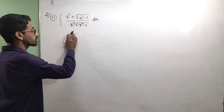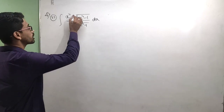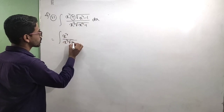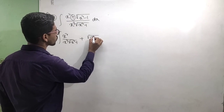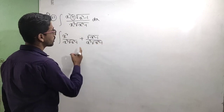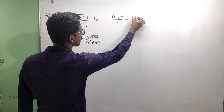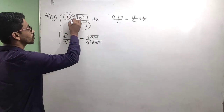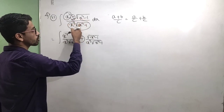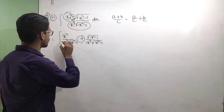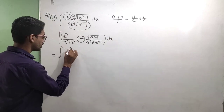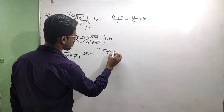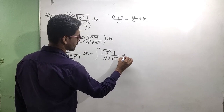The next question: integration of x square plus root over of x square minus one, divided by x cube into root over of x square minus one, dx. We separate this into: integration of x square by x cube root over of x square minus one dx, plus integration of root over of x square minus one by x cube root over of x square minus one dx.